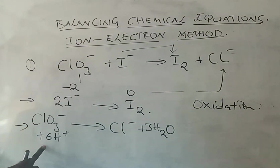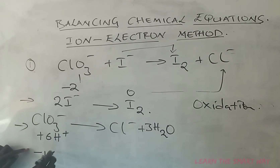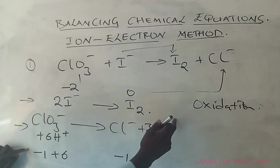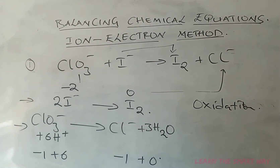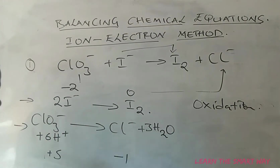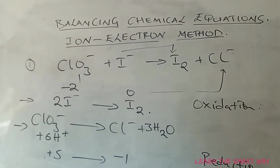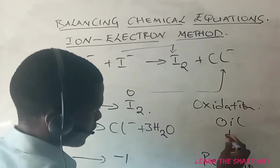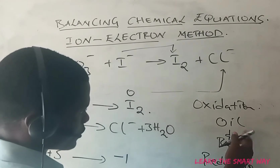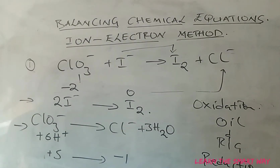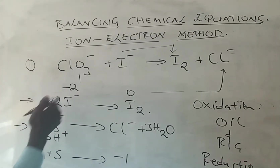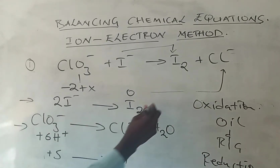In the second half-reaction, there is a charge of negative one on the right, and on the left we have six positive hydrogen ions plus a negative one from ClO₃⁻, giving a net charge of positive five on the left. Moving from positive five to negative one is a decrease, so this is a reduction reaction. For the first half-reaction, we need to add two electrons on the right-hand side — oxidation is loss of electrons (OIL RIG).